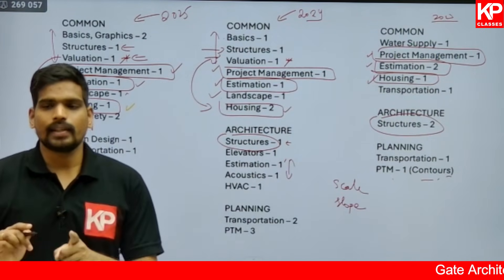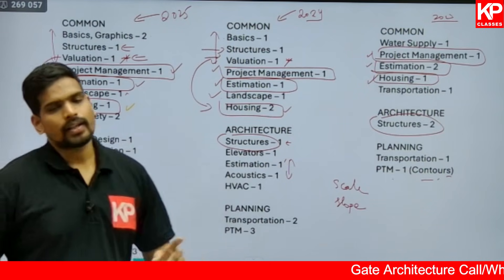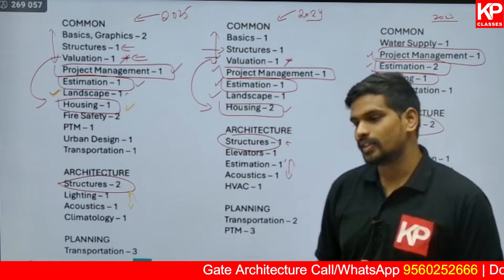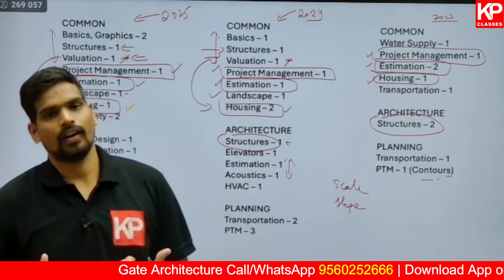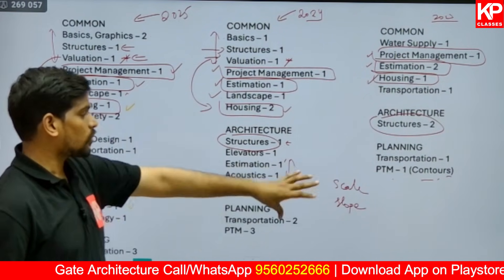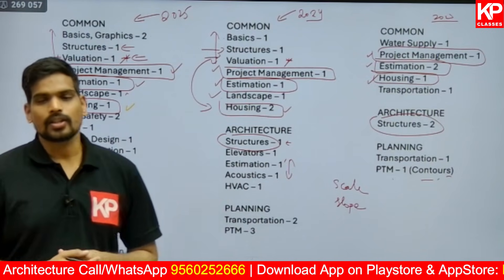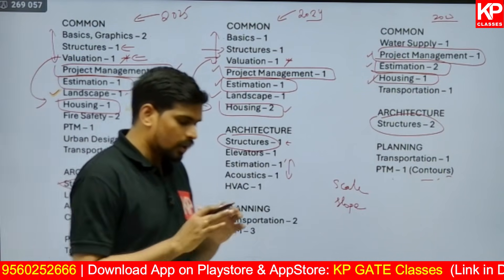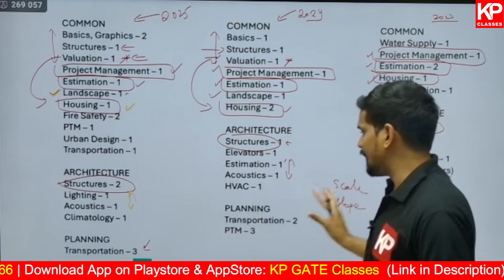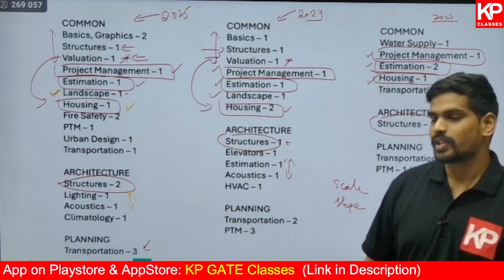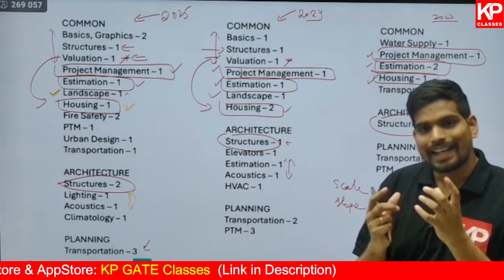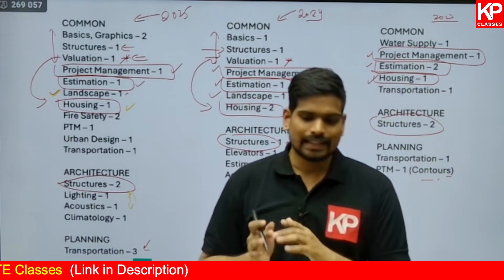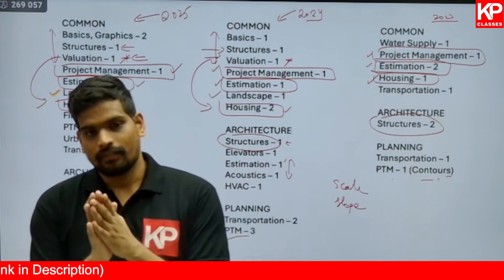Additional subjects like HVAC and Elevators sometimes appear as well, though they are less frequent. For the Planning part, both PTM and Transportation have strong numerical components. Under PTM, numericals include population projection, scale-based calculations, and slope-based calculations. All three numericals in the 2025 paper were on advanced Transportation topics. Urban Economics under PTM is also important — the 2024 paper had numericals on urban economics and financial aspects of Planning Technique Management.